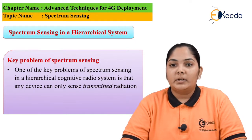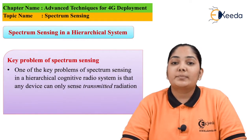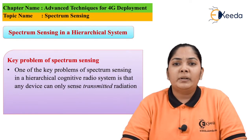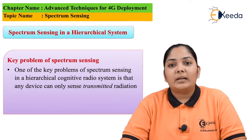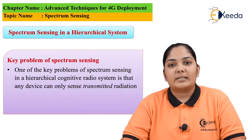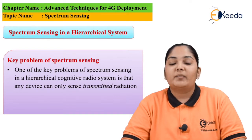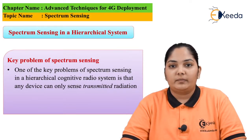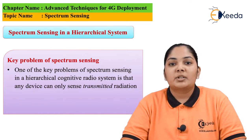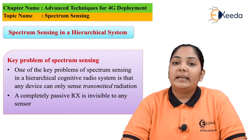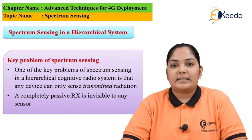The problem here is to identify the frequency that has been received. As the receiver is receiving multiple frequencies, or the environment near the antenna has multiple frequencies, it is difficult to identify which is the exact frequency the receiver is going to receive. The main key problem here is to identify the received frequency, since a completely passive receiver is invisible to the sensor.